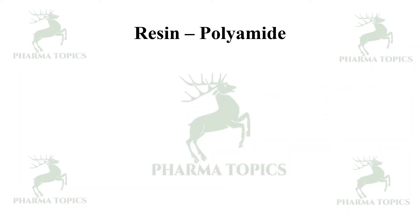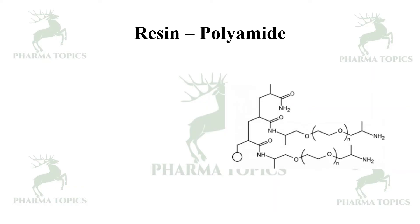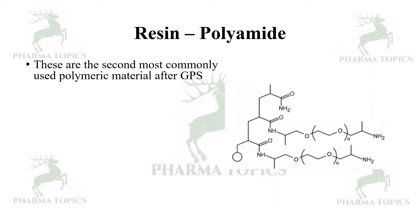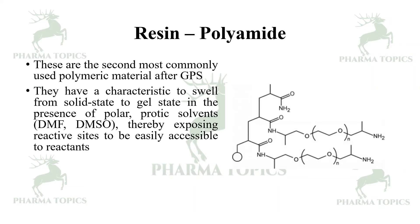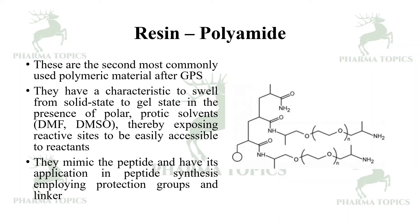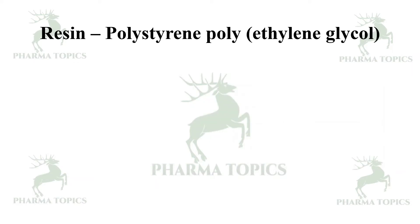Polyamide resin is the second most commonly used polymeric material after GPS. These resins have the characteristic to swell from solid state to gel state in the presence of polar or protic solvents such as DMF or dimethyl sulfoxide, thereby exposing the reactive sites to be easily accessible to the reagents. They mimic the peptide and have application in peptide synthesis, using protection groups and linkers.